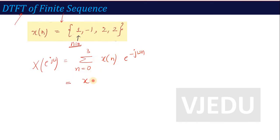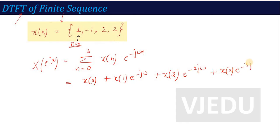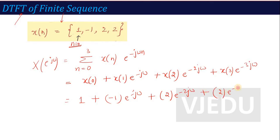Expanding the summation: at n = 0 we have x(0) = 1; at n = 1 we have x(1)·e^(−jω) = −e^(−jω); at n = 2 we have x(2)·e^(−2jω) = 2e^(−2jω); and at n = 3 we have x(3)·e^(−3jω) = 2e^(−3jω). So the DTFT of the finite sequence is simply: put in the limits, expand the formula, substitute the values, and get the result.